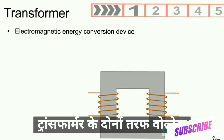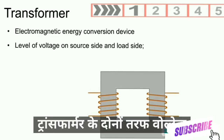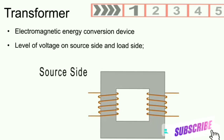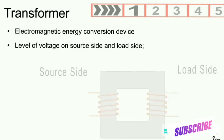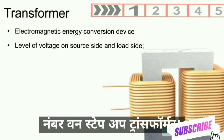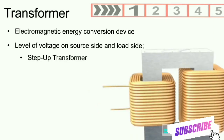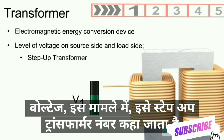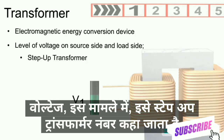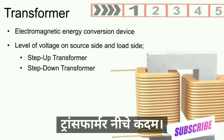Depending upon the level of voltage on both sides of a transformer — that is, source side and load side — it can be of two types. Number one: step-up transformer, when we receive energy at one voltage and deliver it at a higher voltage.